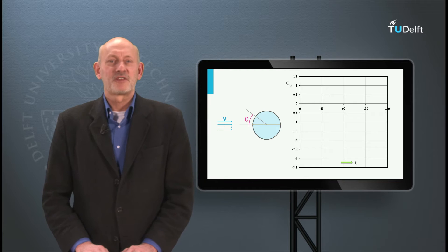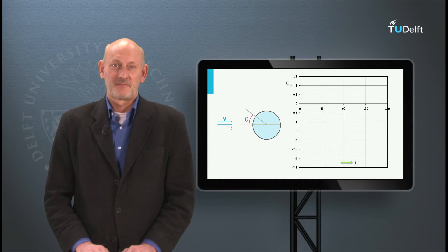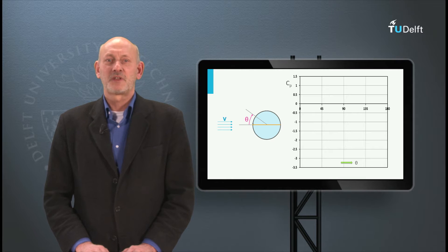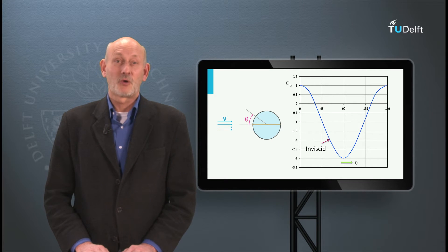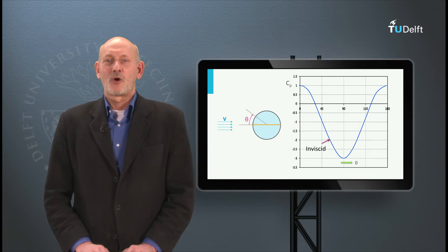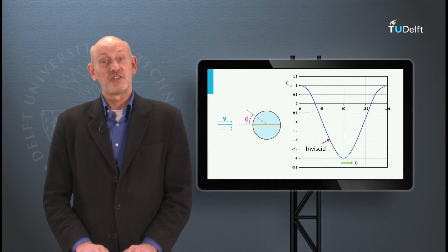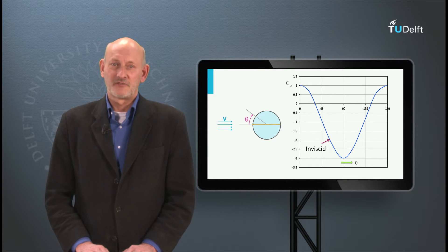Now let us first look at the flow over the cylinder when there is no friction. The distance over the contour from the stagnation point is expressed as the angle theta. The graph gives the pressure coefficient with theta going from the stagnation point at theta is zero to the back of the cylinder at theta is 180 degrees. We now know that in the stagnation point we have the total pressure, so CP is 1. As we go along the contour of the circle the velocity goes up and the CP goes down. Passing 90 degrees the reverse happens and at 180 degrees the CP is 1 again. There is no pressure difference between the front and the back of the cylinder.